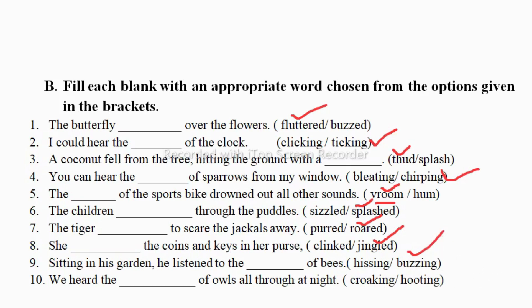The last one: we heard the dash of an owl all through the night — croaking or hooting? Croaking is the sound made by a frog, but the sound made by an owl is hooting. So this is your second exercise.